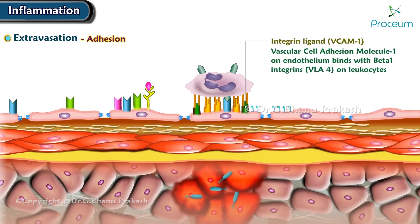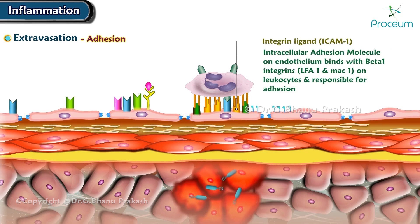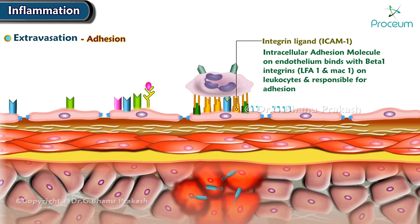VCAM-1, short for Vascular Cell Adhesion Molecule 1, on endothelium binds with the beta-1 integrins VLA-4 on leukocytes. ICAM-1, short for Intracellular Adhesion Molecule 1, binds with the beta-2 integrins LFA-1 and MAC-1 on leukocytes and is responsible for adhesion.